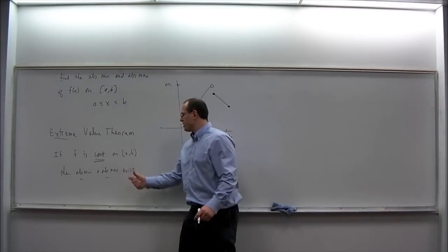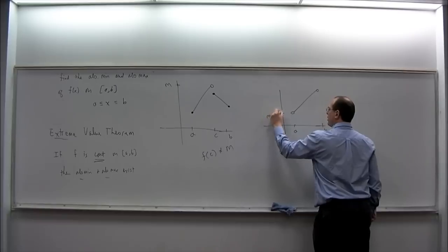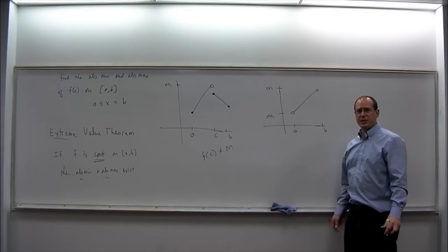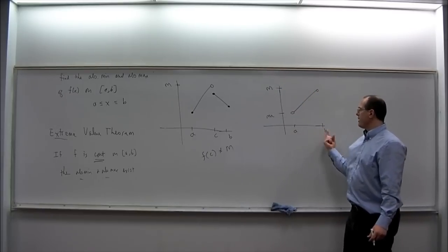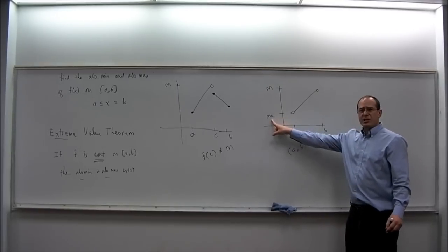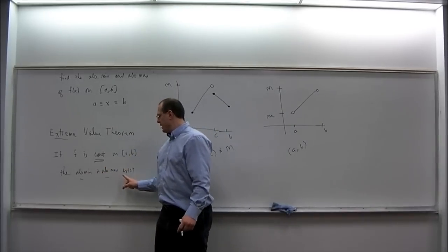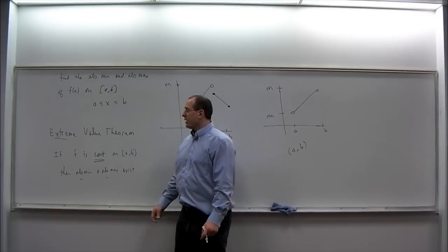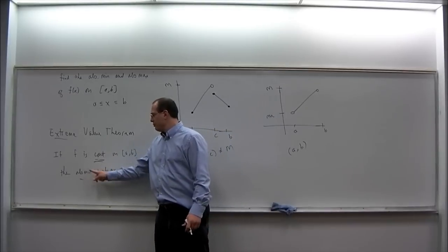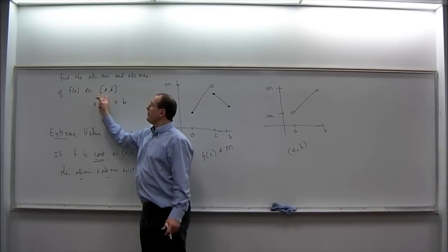The closed interval part is also necessary. Consider a simple function like a line. If you don't include the endpoints, looking at the open interval A to B, we'd like to say the minimum is lowercase m and the maximum is uppercase M — but because the domain does not include the endpoints, neither m nor M is actually a function value on the open interval. So both the absolute min and the absolute max do not exist in this situation. If you have a continuous function on a closed interval, the Extreme Value Theorem guarantees the absolute min and absolute max exist.